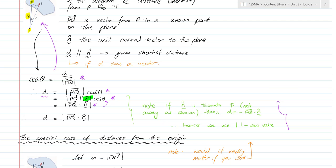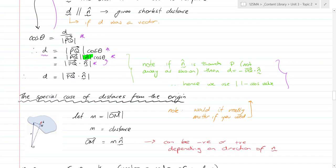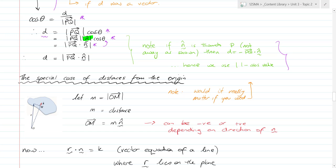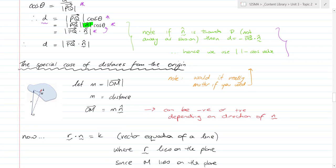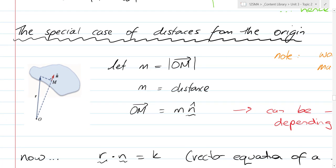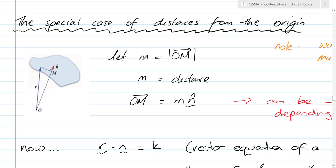But I want to take you through one specific case, which will be really important for when we do the distance between two planes. The specific case is: what if the point P is the origin O? That leads to a simplification. The special case of distance from the origin: we want to find M, the shortest distance from O to the plane, where the point on the plane N is such that OM is parallel to N. So OM equals M times the unit vector N̂.